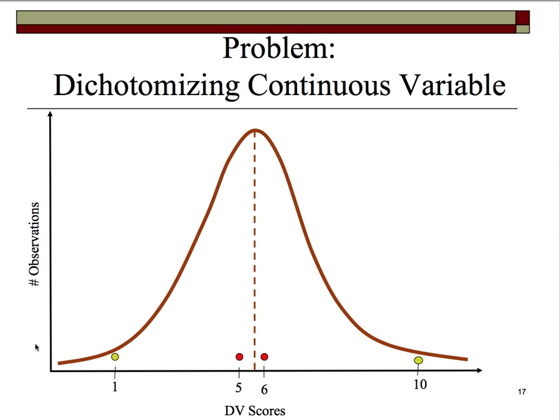A 5 is much more like a 6 than it is like a 1, and a 6 is much more like a 5 than it is like a 10. Artificially dichotomizing continuous variables will not allow for as sophisticated a statistical test, and secondly, you lose tons of useful information — the ability to make fine-grained differentiation.